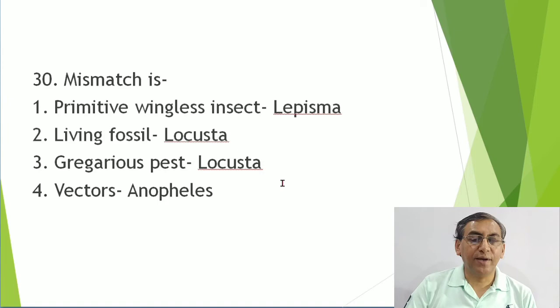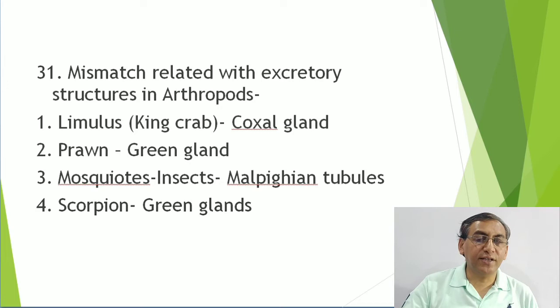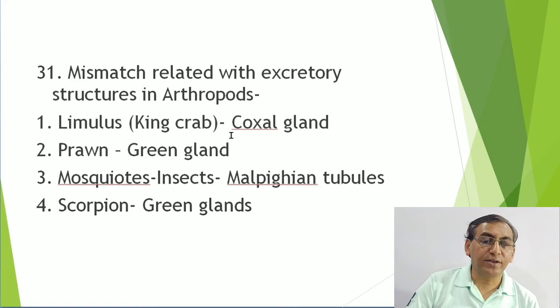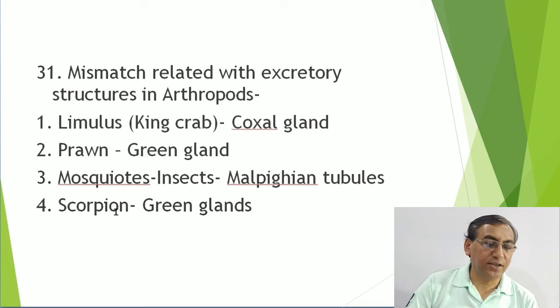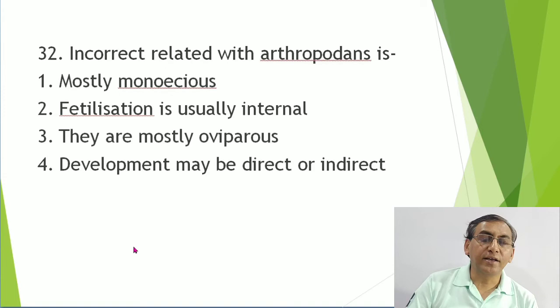Mismatch related to excretory structures in Arthropoda: Limulus (king crab) has myriapoda-type structures; Arachnida have coxal glands; Crustacea/prawn have green glands - correct; insects have Malpighian tubules - correct. Scorpion is in Arachnida, so scorpion also has coxal glands. That is the mismatch.